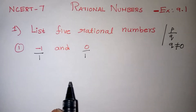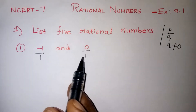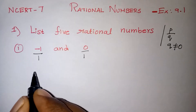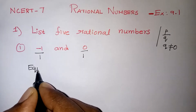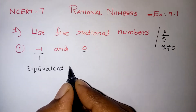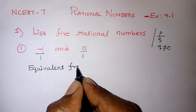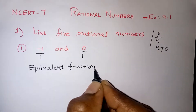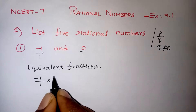Now we need to find 5 numbers between minus 1 and 0. In between these two, we do not have any integers. So we need to find the equivalent fraction. Equivalent fractions means we have to multiply the same number with both the numerator and denominator. We are going to find the equivalent fraction by multiplying with 10, because that is very easy.